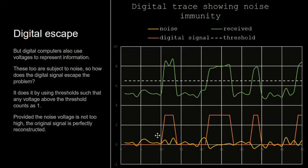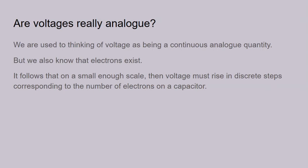So if the orange signal is what you want to transmit, and you've got some circuit noise represented by the yellow signal, add the two together and you get this wavy digital signal. And if you put a scope onto one of the terminals of a computer, you do see wavy signals — you don't see perfect square waves. But it's fine, provided you don't cross the threshold: provided you're above the threshold when it's one and below the threshold when it's at zero. If that happens, the original signal is perfectly reconstructed.